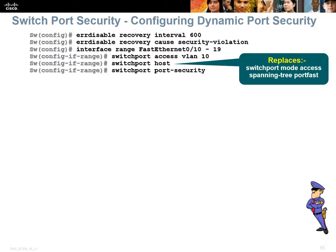When a switch port decides that port security has been violated, it goes into a state called error-disable — that's as good as shutdown. It will stay in error-disable forever or until the switch loses power. As a network administrator, it's in your best interest to set up automatic recovery. Two commands: errdisable recovery interval 600 and errdisable recovery cause security-violation. This will attempt to recover from a security violation in 10 minutes — the interval is in seconds. There's also a shortcut command, switchport host, which is equivalent to switchport mode access and spanning-tree portfast combined.